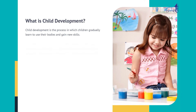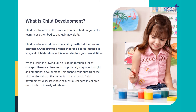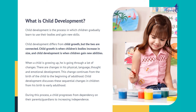What is child development? Child development is the process in which children gradually learn to use their bodies and gain new skills. Child development differs from child growth, but the two are connected. Child growth is when children's bodies increase in size, and child development is when children gain new abilities.